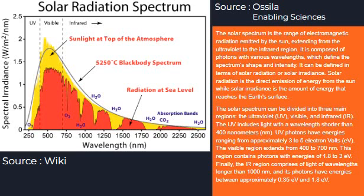The visible region extends from 400 to 700 nanometers, containing photons with energies of 1.8 to 3.5 eV. Finally, the IR region comprises light of wavelengths longer than 1,000 nanometers, and its photons have energies between approximately 0.35 eV and 1.8 eV.